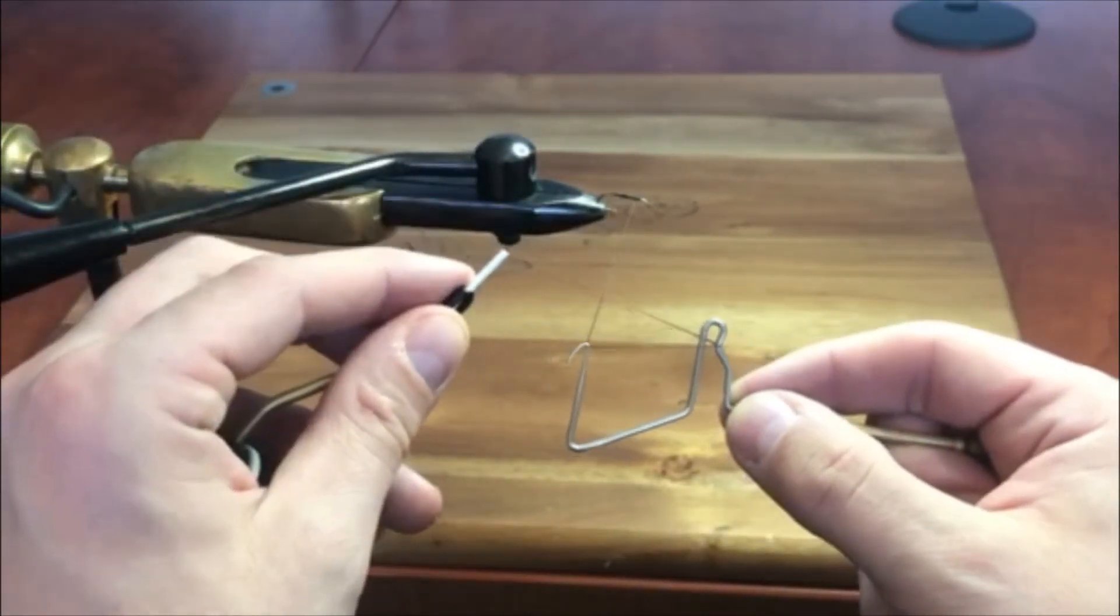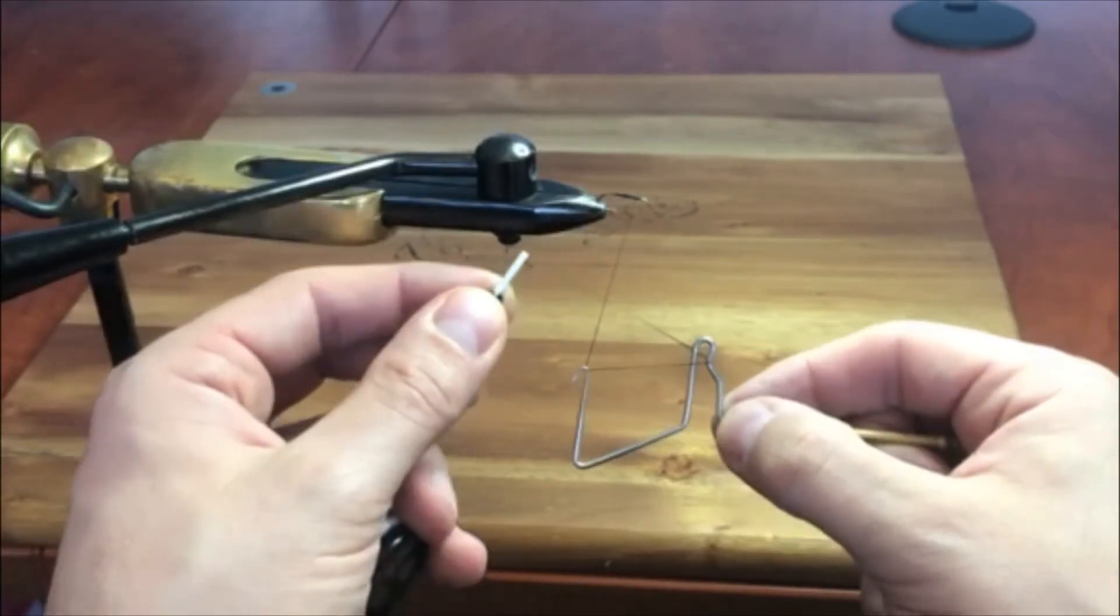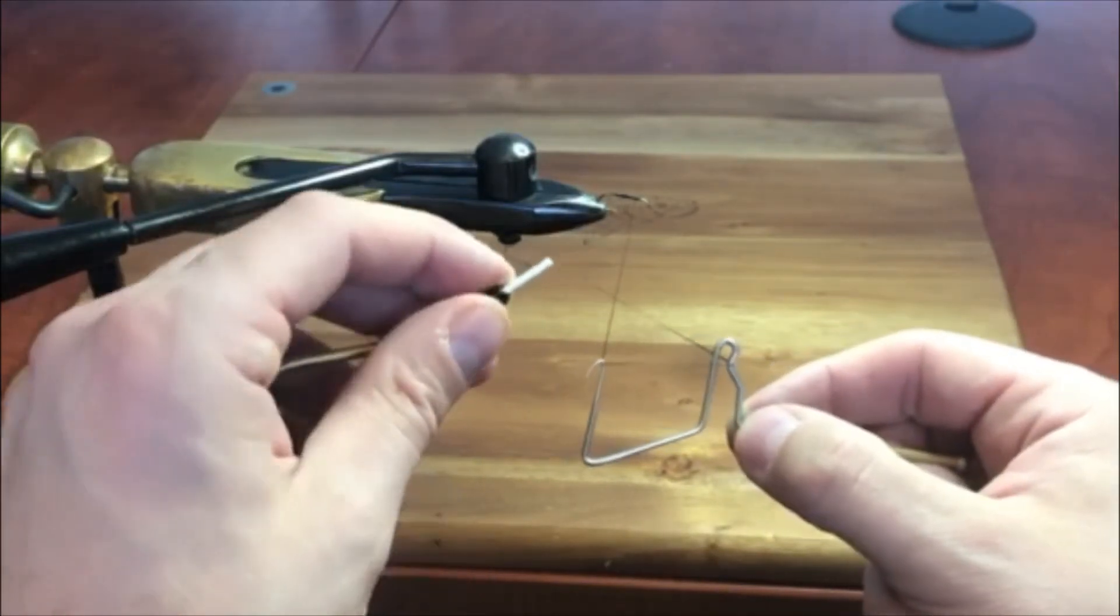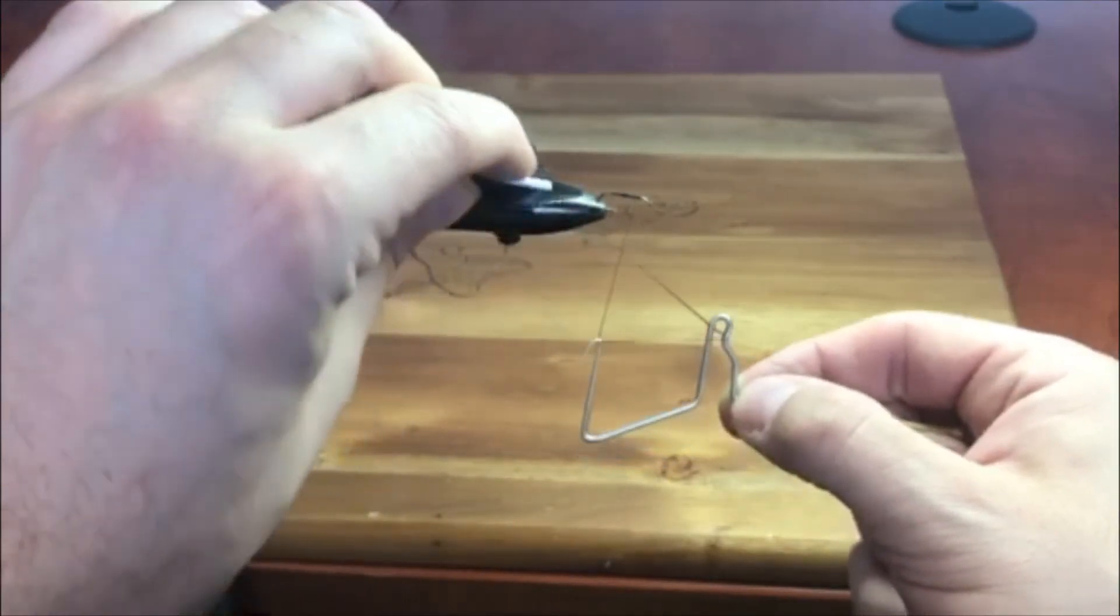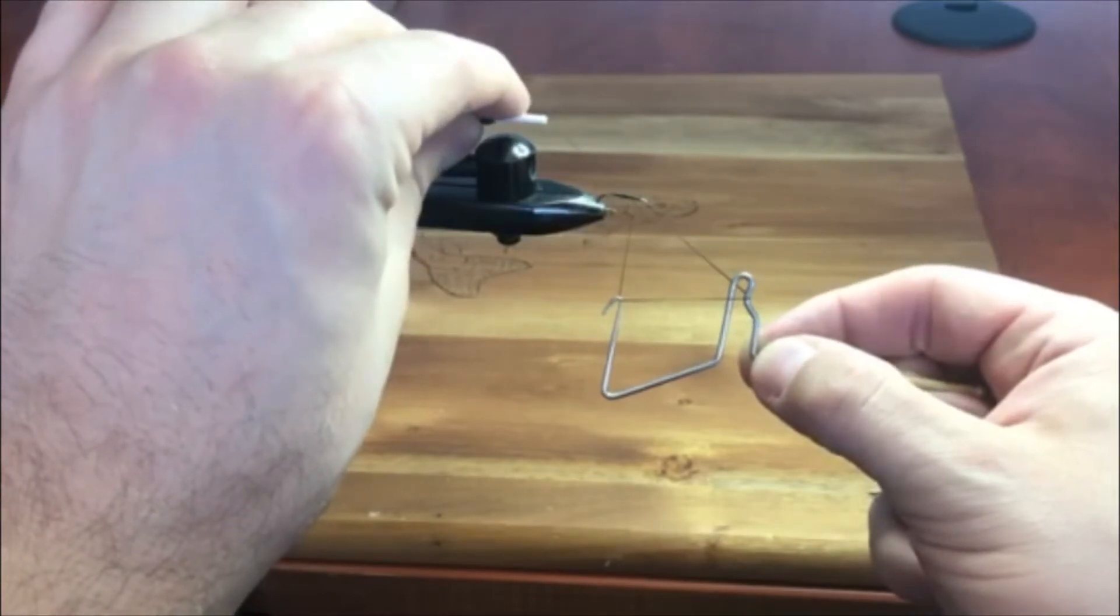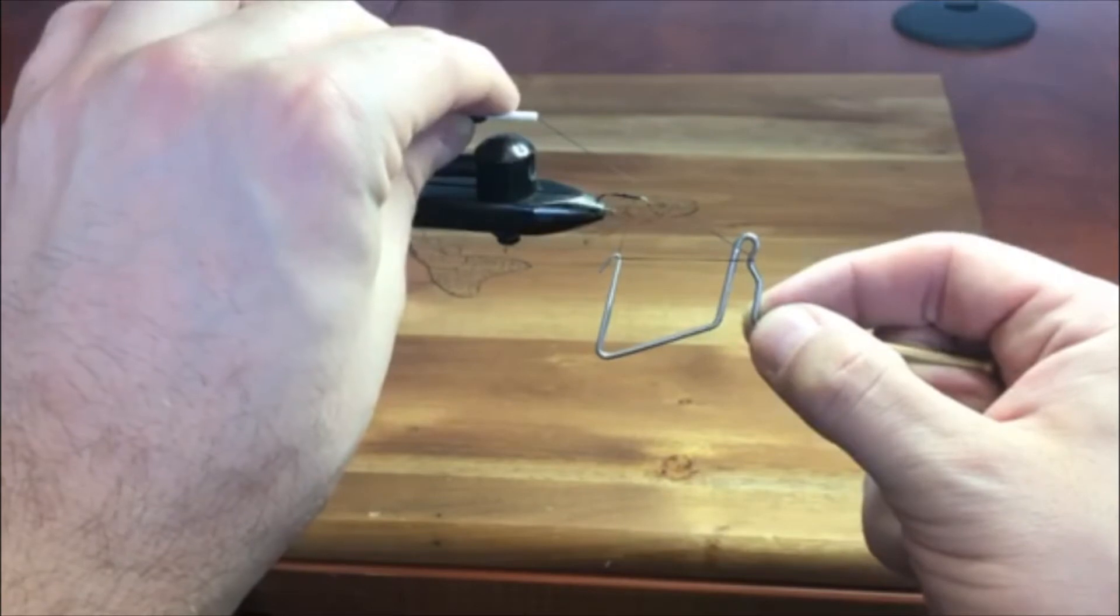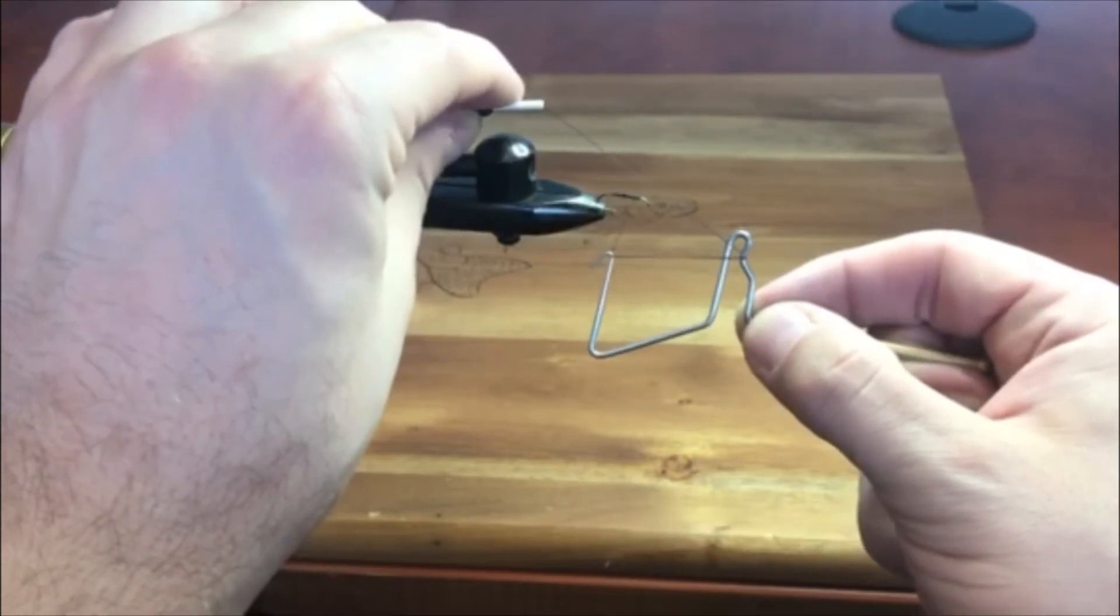Now you'll notice that my hands are below the hook and they're quite close to the hook itself. My next move is to raise that bobbin up so it is running parallel with the hook shank. I still have pressure on the whip finish tool; the thread is still wrapped around both those parts.